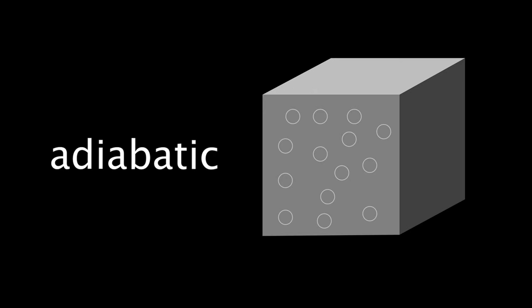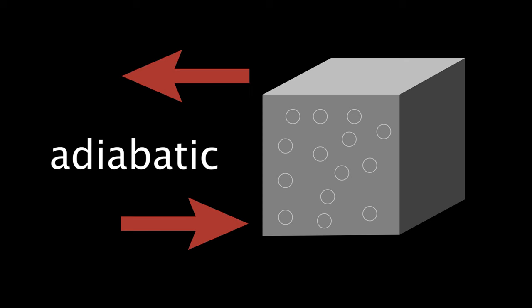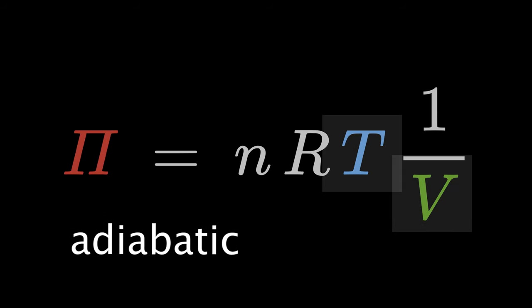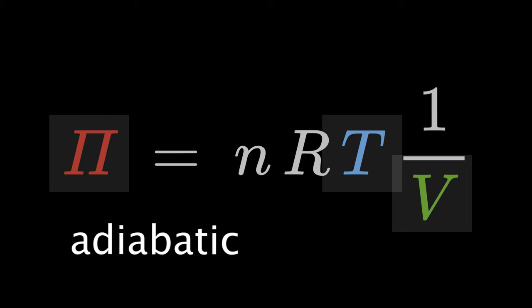During an adiabatic process, no thermal energy is transported out and into the system. During this process, the temperature T, volume V, and pressure pi of the gas can change simultaneously.